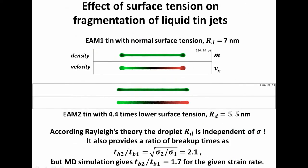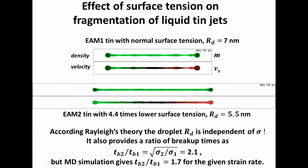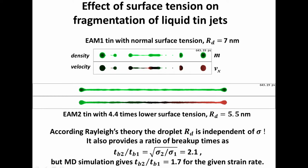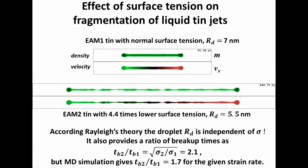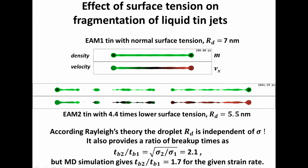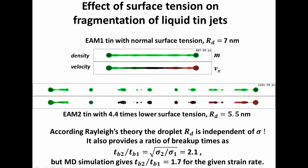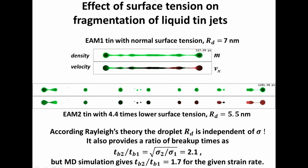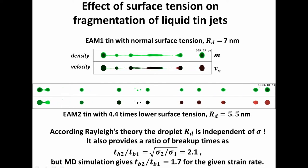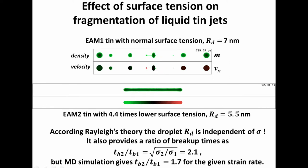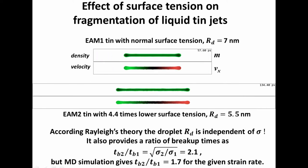Another example shows that droplet size depends very little on surface tension. One atomistic simulation uses a larger surface tension, and another uses four times smaller — about one-quarter of the normal liquid tin surface tension. You see that with smaller surface tension, Plateau-Rayleigh instability is greatly delayed, and if surface tension were zero, Plateau-Rayleigh instability would not develop at all.